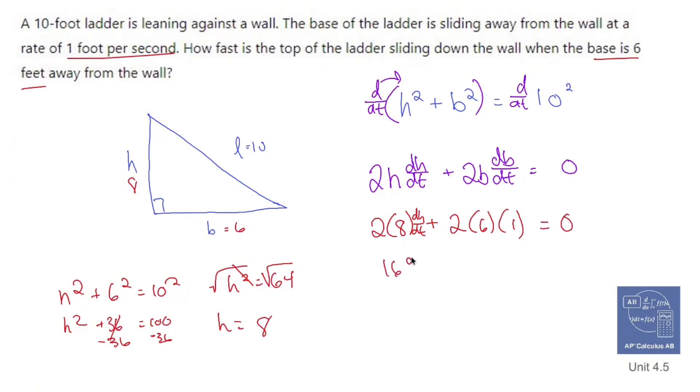So 16 DHDT plus 12 equals 0. Subtract 12. 16 DHDT equals negative 12. Divide by 16. Divide by 16. And you get DHDT equals negative 3 quarters. Now my unit of measure is feet per second. So we'll say feet per second.